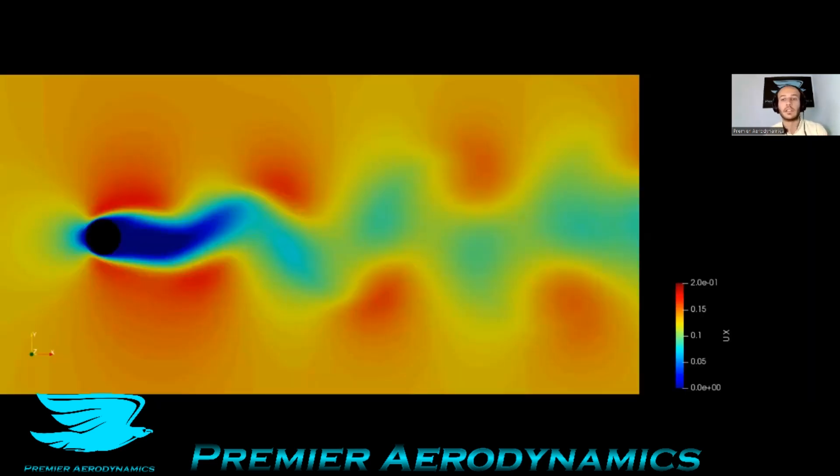And this video is the UX velocity, so the velocity from left to right downstream. And as I've mentioned before, there is this higher velocity than the free stream, just over the cylinder. Obviously you have the boundary layer forming...